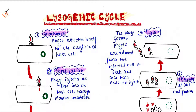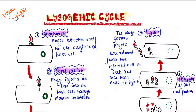When a virus enters a host cell or host body, it can follow one of two paths. The first path is the lytic cycle and the second is the lysogenic cycle. Let's talk about the lysogenic cycle today.